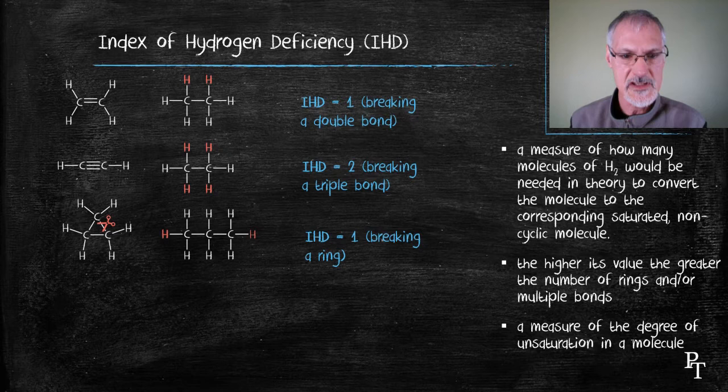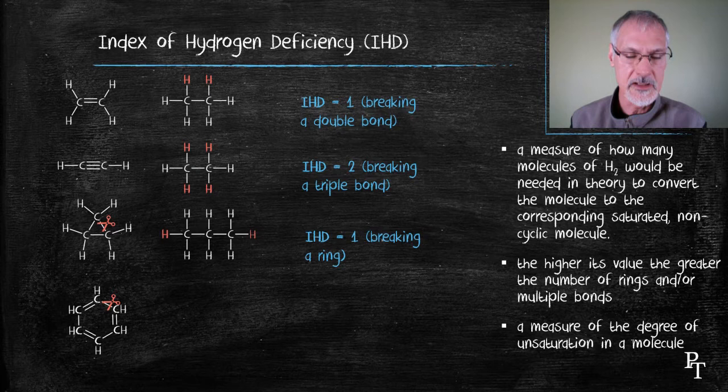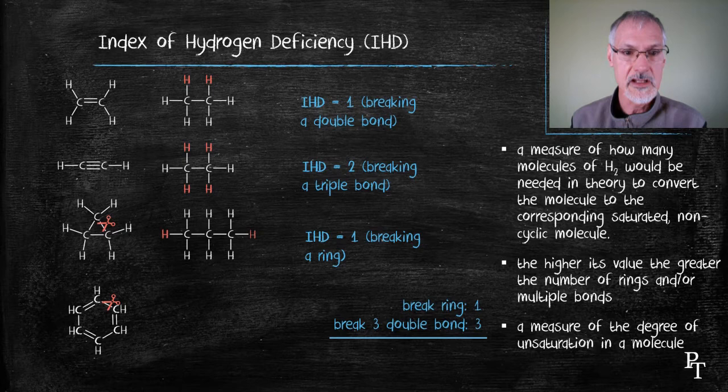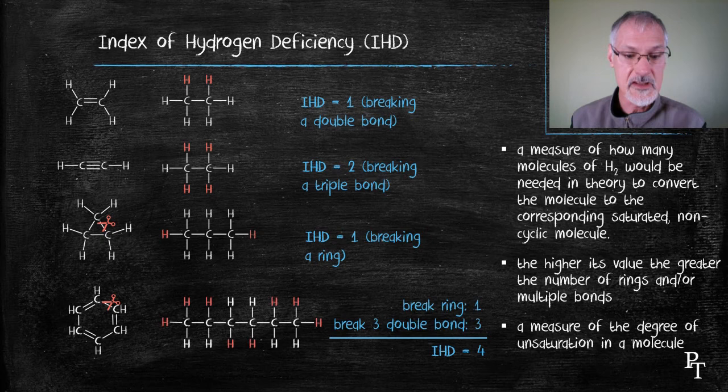Let's apply it now to this molecule, benzene, which we've seen before. If I want to saturate that particular molecule, I'm going to have to break the ring and then essentially saturate the three double bonds that are present. I would predict then it has an IHD of four.